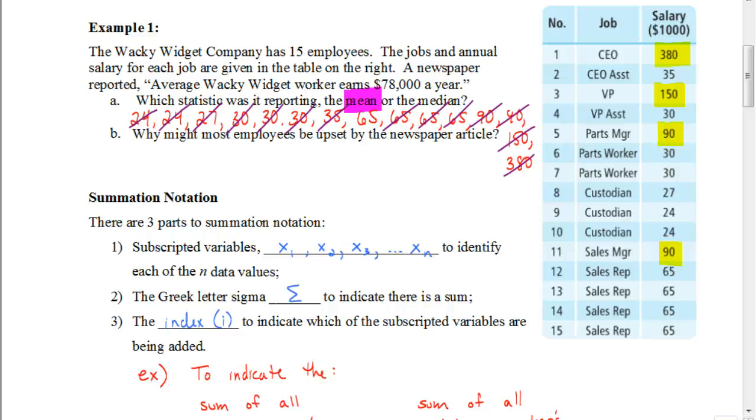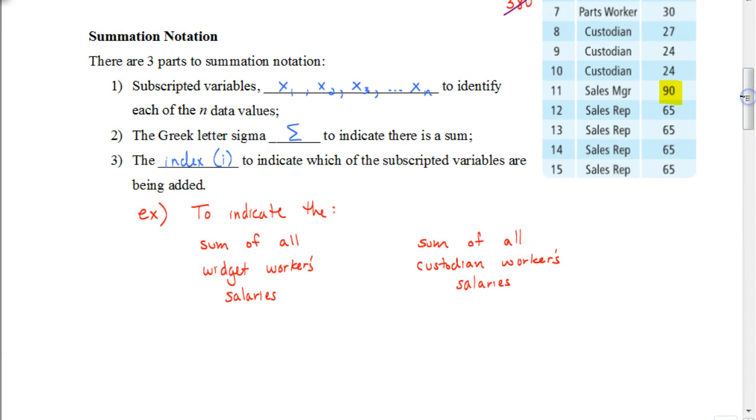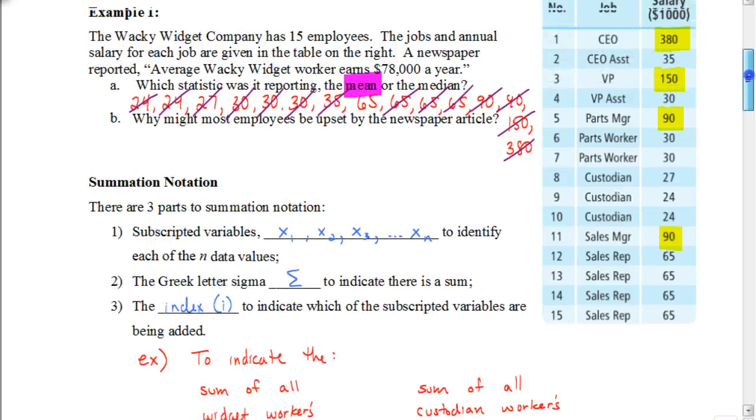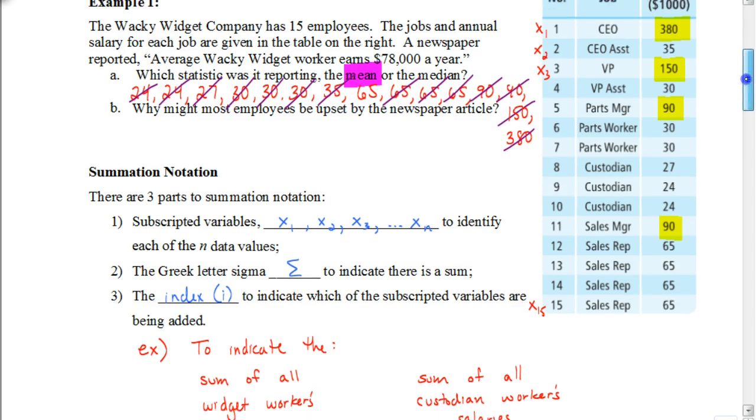Now, that brings us to another way that we could identify finding the average of a set of numbers, and that's what's called summation notation. Summation notation, there's three parts to it. The first part is that we're going to use what's called subscripted variables, which we can identify as x sub 1, x sub 2, x sub 3, all the way up to the nth number in the data. So in this case here, when I look at these set of numbers, I could refer to this first one as x sub 1, this would be x sub 2, this would be x sub 3, all the way down to the bottom would be x sub 15. So that would refer to the particular numbers in that set.